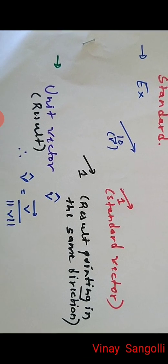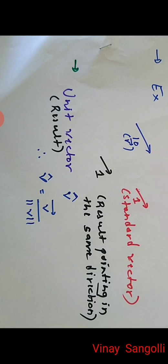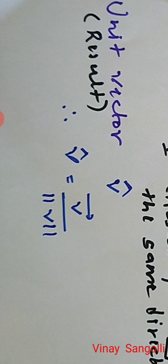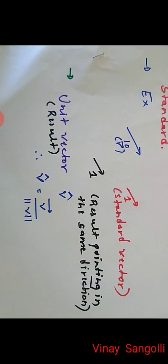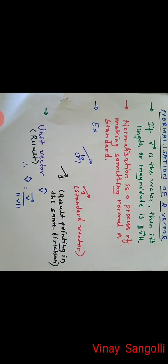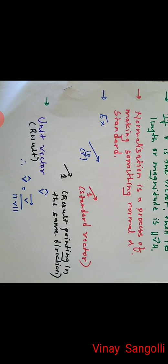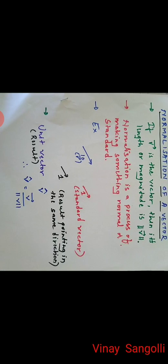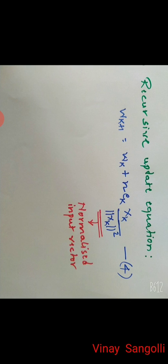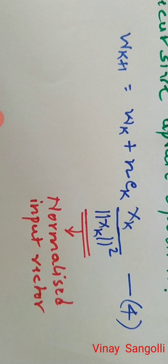The result of this normalization is a unit vector, denoted v-hat, which points in the same direction as vector v and is defined as v̂ = v / |v|. Applying the same concept, the normalized input vector in the LMS algorithm is X(k) divided by |X(k)|, which becomes the normalized input vector X̂(k).